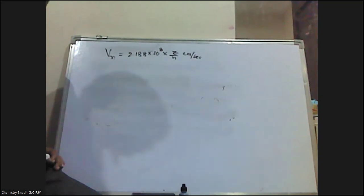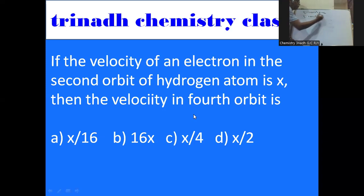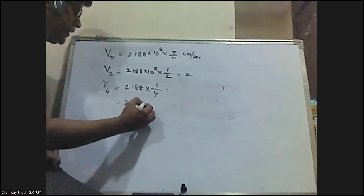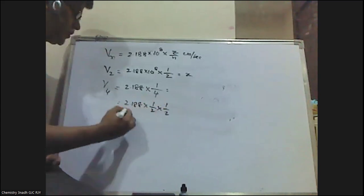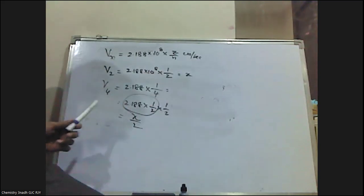For hydrogen atom z = 1. The velocity in the second orbit: v2 = 2.188 × 10⁸ × (1/2) = x. For the fourth orbit: v4 = 2.188 × 10⁸ × (1/4) = 2.188 × 10⁸ × (1/2) × (1/2) = x/2. So the answer is x/2.